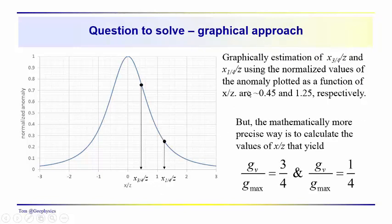So we did this graphically. Again, we showed that x three quarters and x one quarter were approximately 0.45 and 1.25.